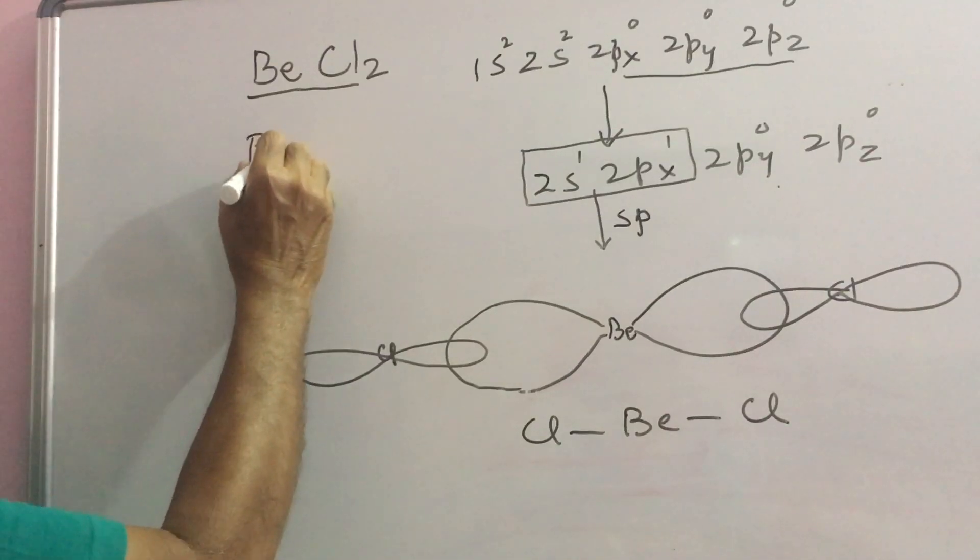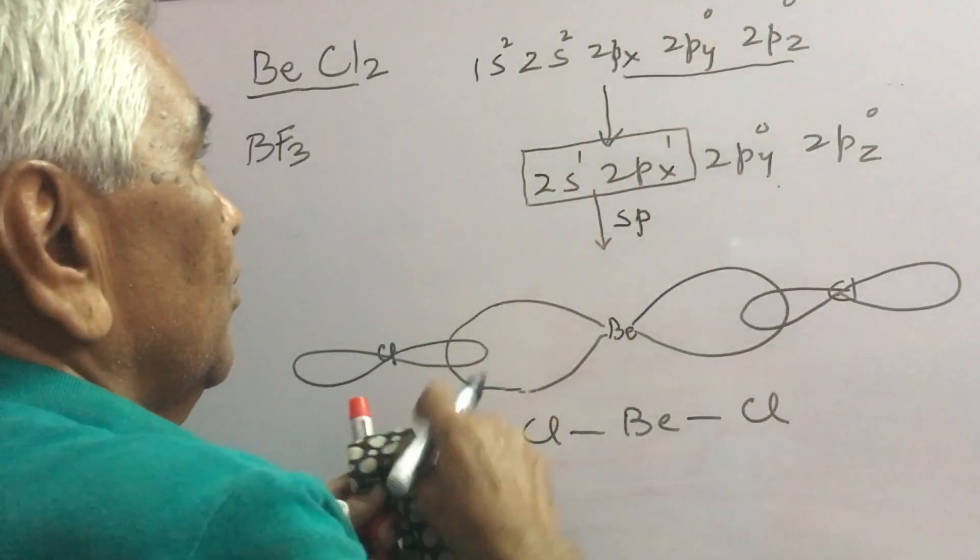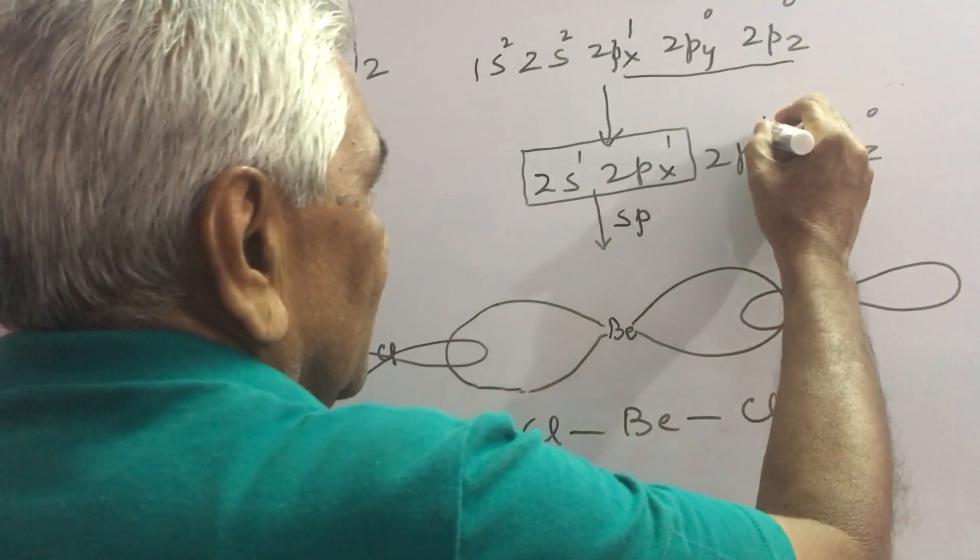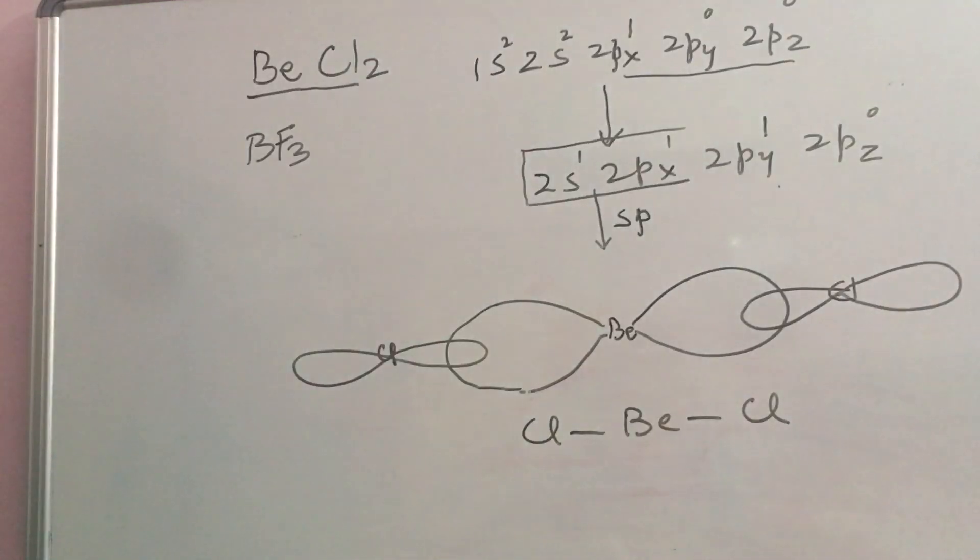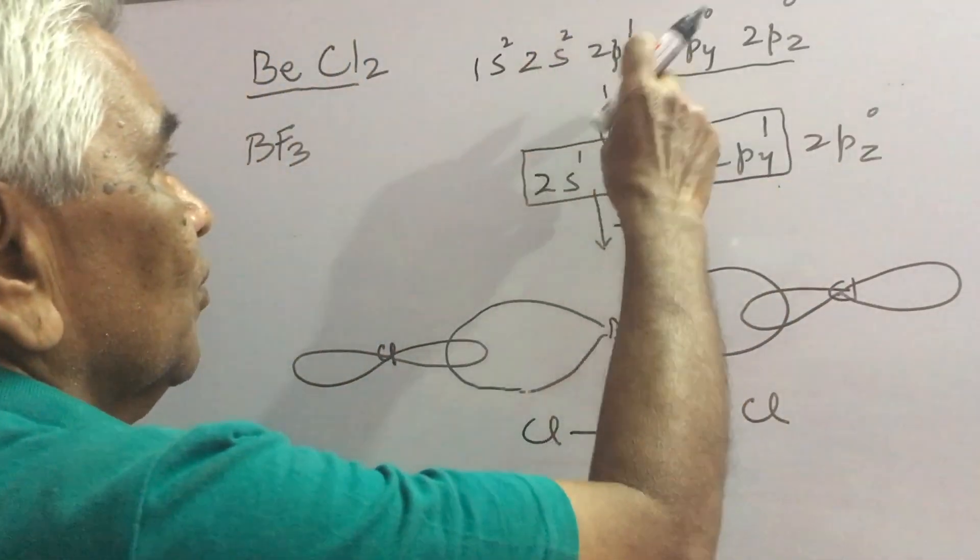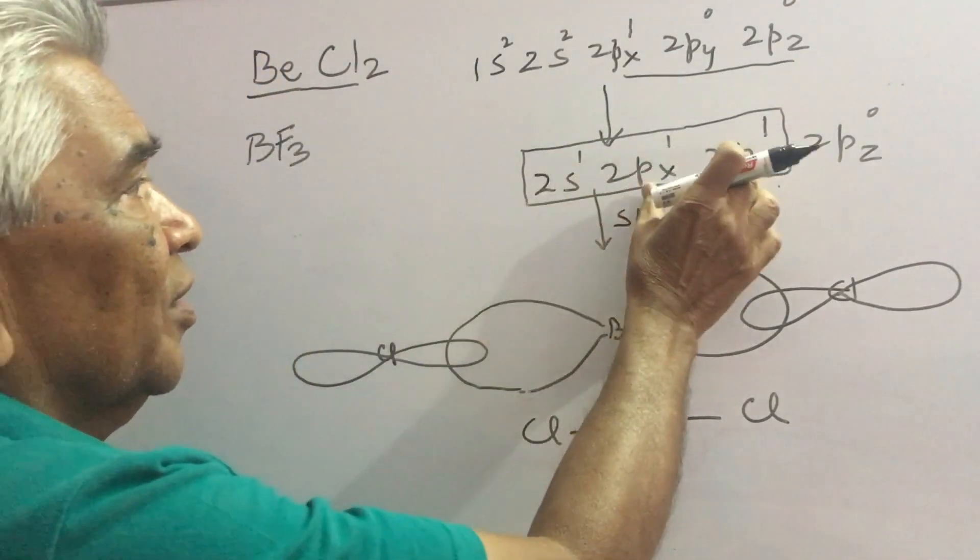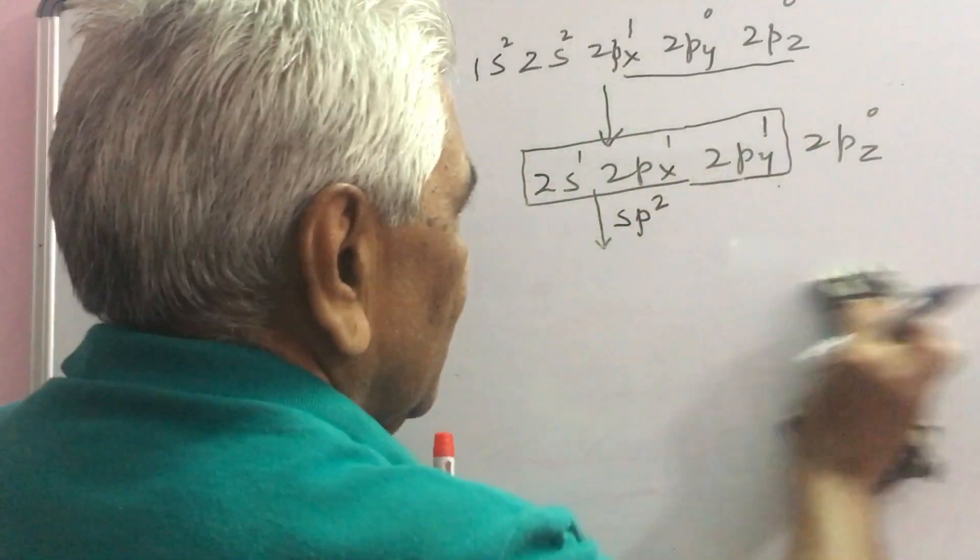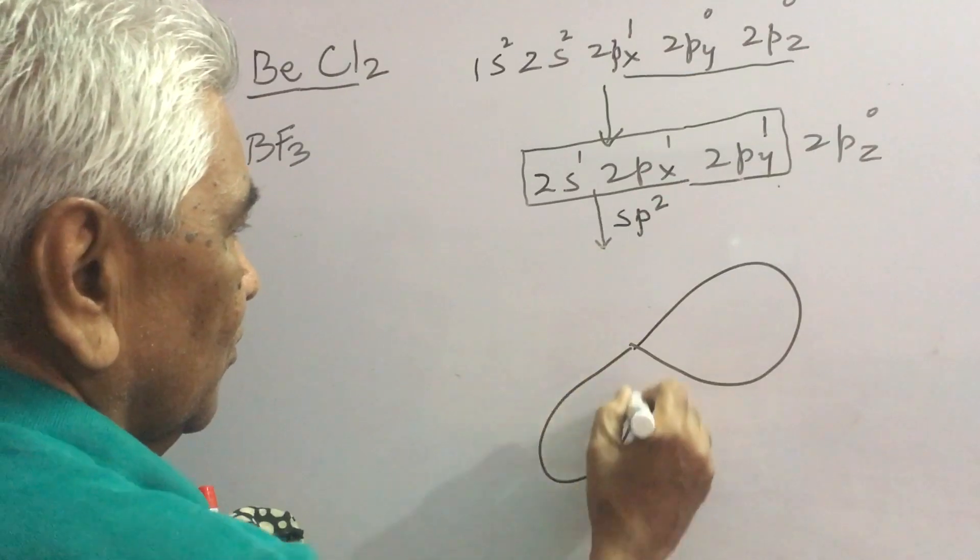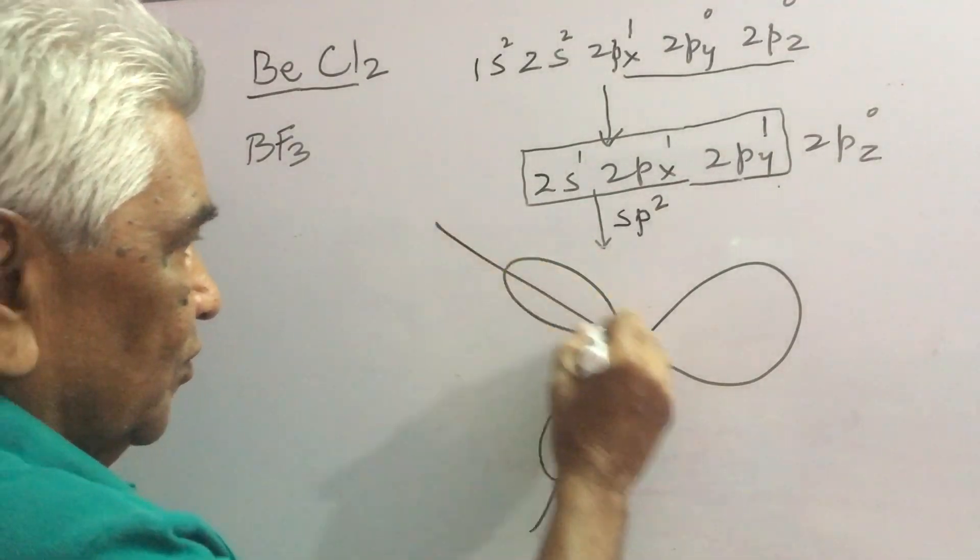Similarly, if you take BF3 boron trifluoride it had 1 electron here, 1 electron here. This is promoted from S and this undergoes sp2 hybridization.